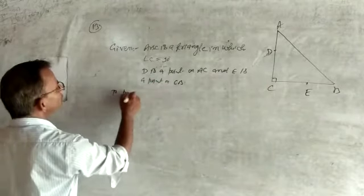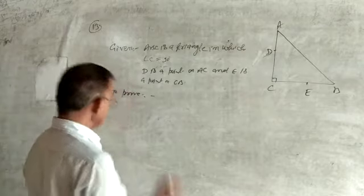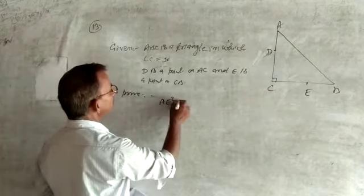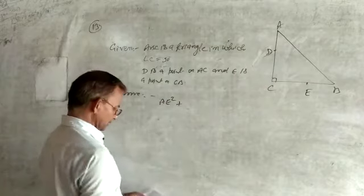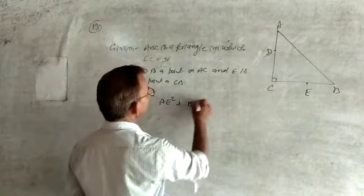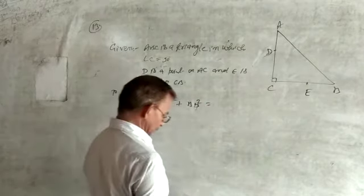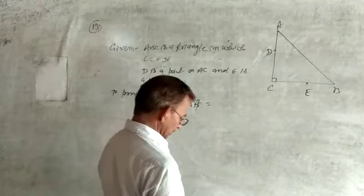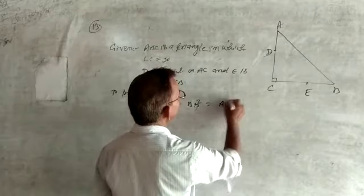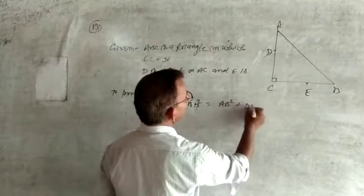To prove: AE squared plus BD squared is equal to AB squared plus DE squared.